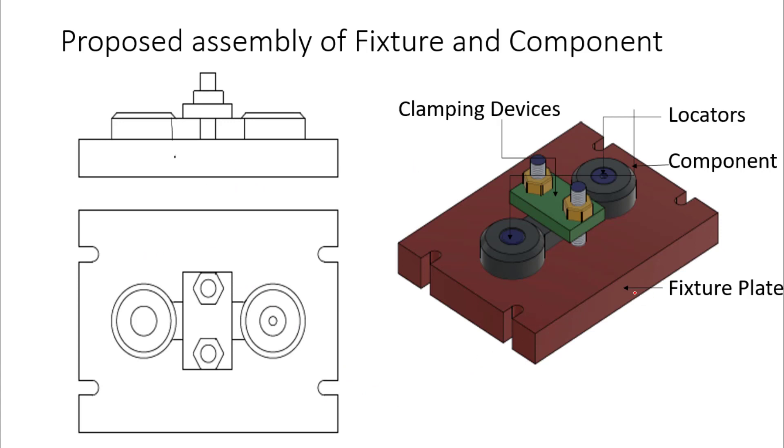First, there is a fixture plate. This plate with red color is shown here. There are four slots. These four slots will be fixed with the milling machine table with the help of T-bolts.